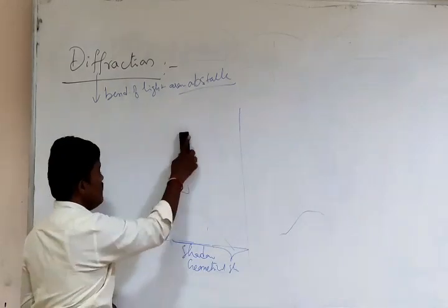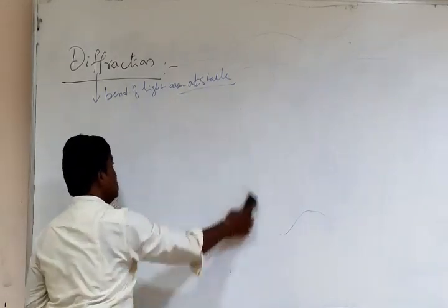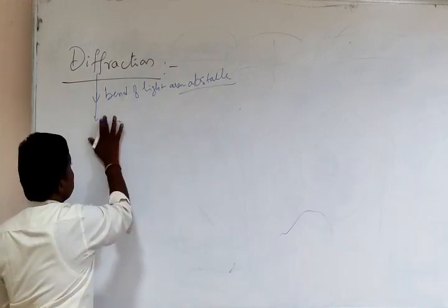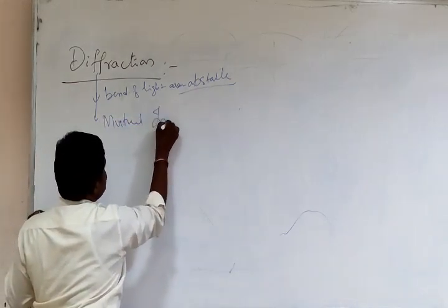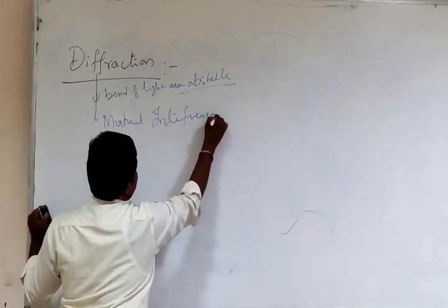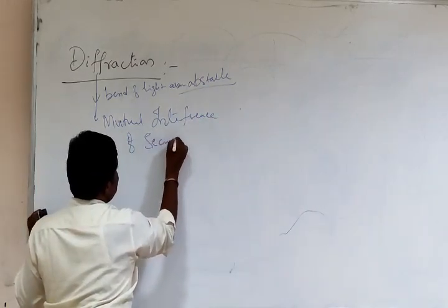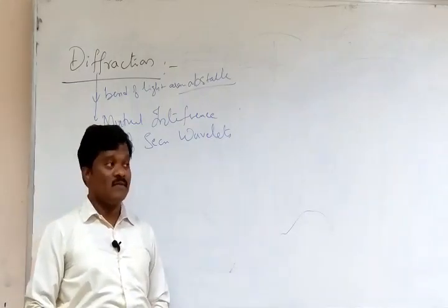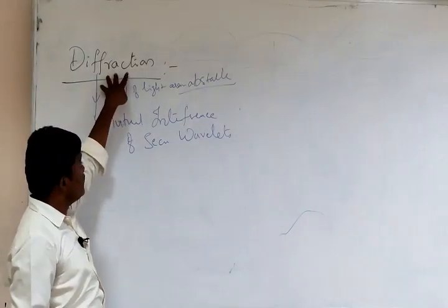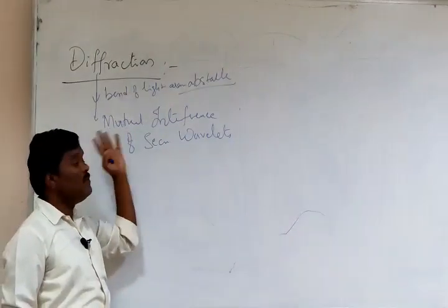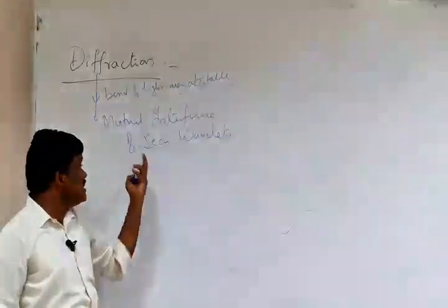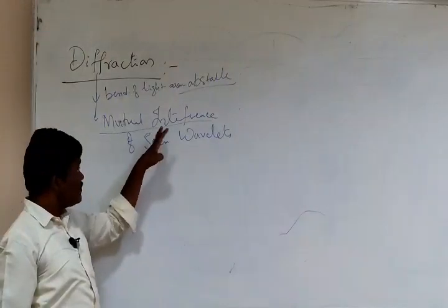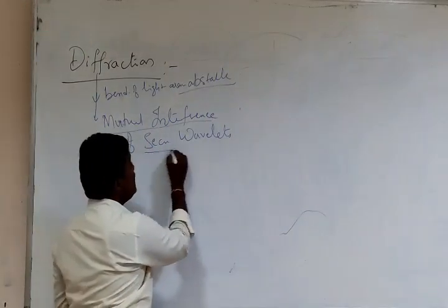There is another definition for diffraction: diffraction is nothing but the mutual interference of secondary wavelets. So diffraction can be represented with interference — there is a mutual interference of secondary wavelets happening.